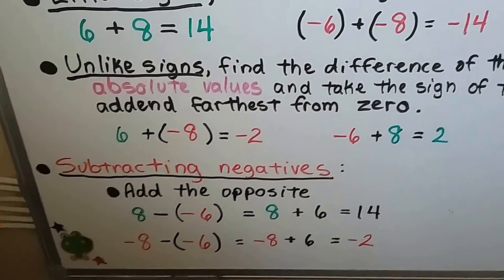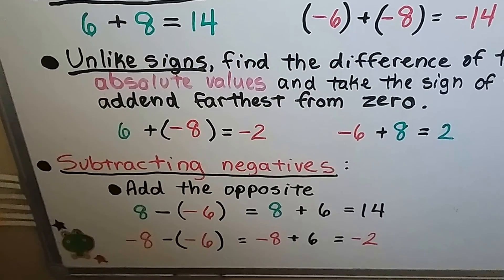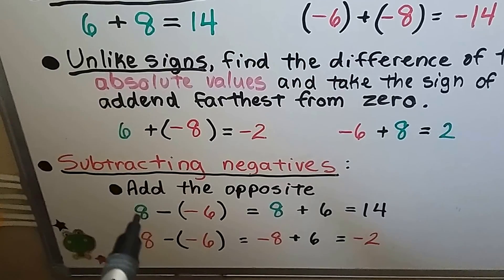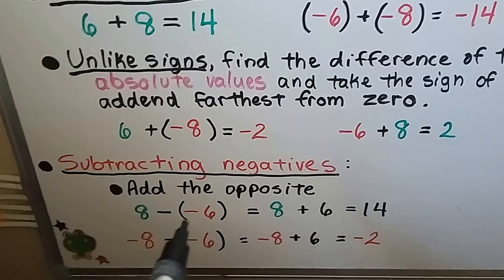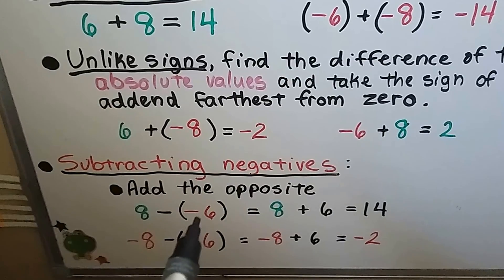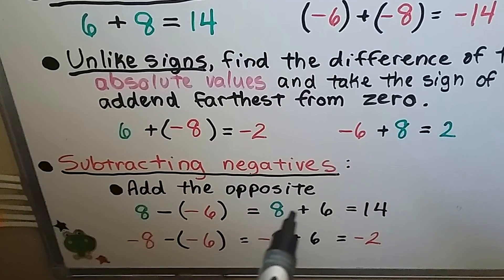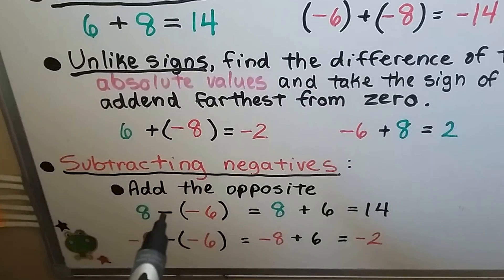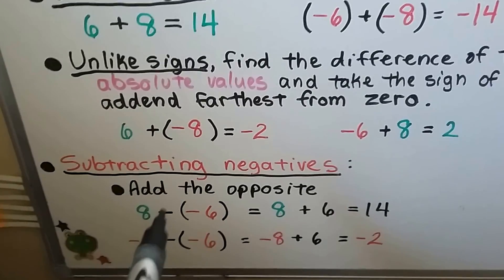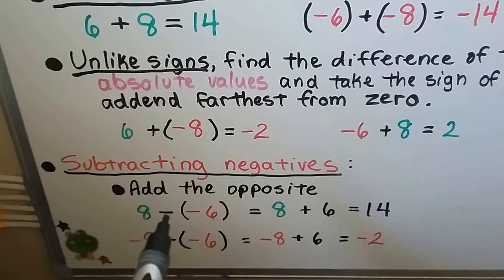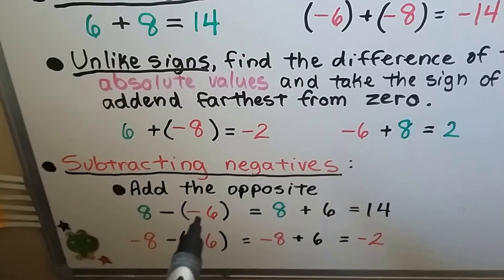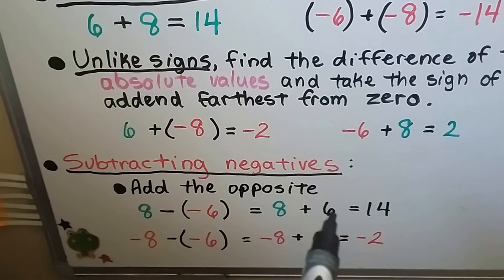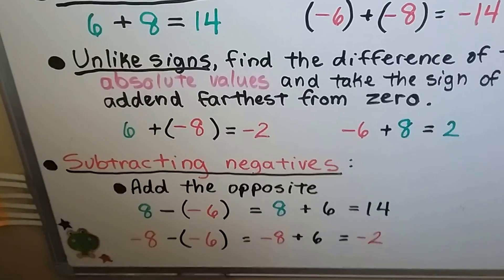When we're subtracting negatives, we add the opposite. If we have 8 minus a negative 6, we turn it into 8 plus 6. We add, so that becomes a plus, and the opposite of a negative 6 is a positive 6. So we have 8 plus 6, which is 14.